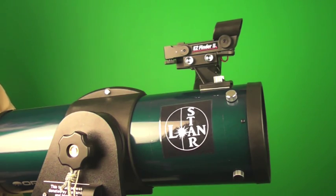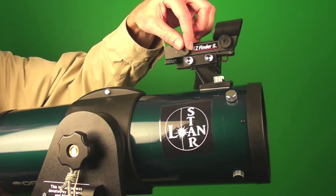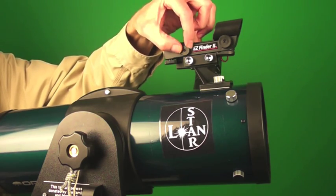The easy finder will help you pinpoint objects in the sky. To use the easy finder, turn the knob clockwise until you hear a click. Look through the easy finder for the red dot. When you see the red dot, that is where the telescope is pointed.